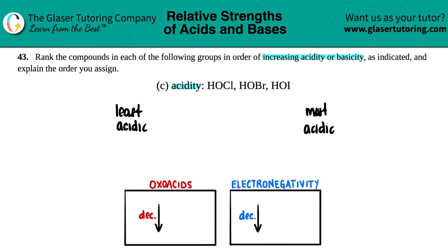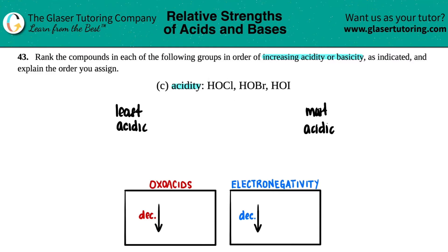Now let's figure out which one is which. I notice I have a hydrogen, an oxygen, and then for each one a different element. It does not matter whether the oxygen is in the middle or on the end — you just need hydrogen, oxygen, and a non-metal. These are classified as oxo acids — oxo for oxygen — and they have that acidic hydrogen.